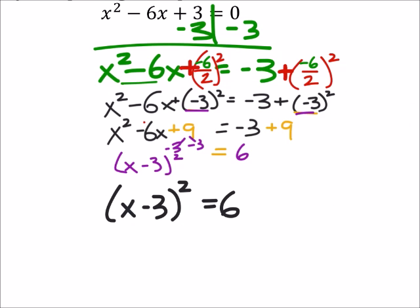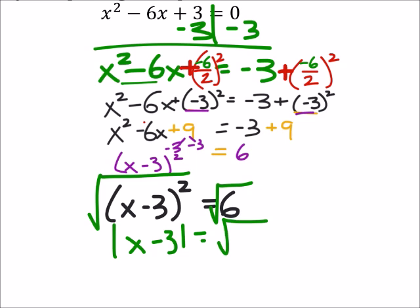Well, back to the basics on this stuff. We'll square root both sides. So, now I have the absolute value of x minus 3 equals the square root of 6.